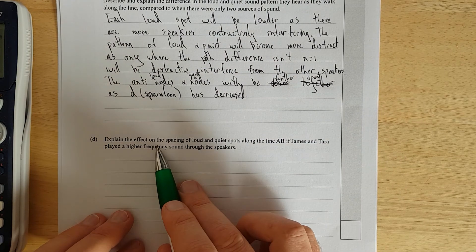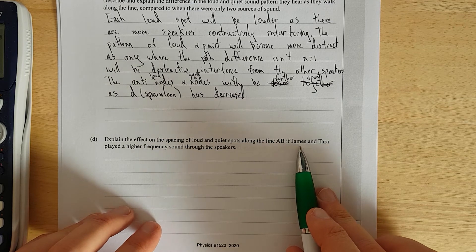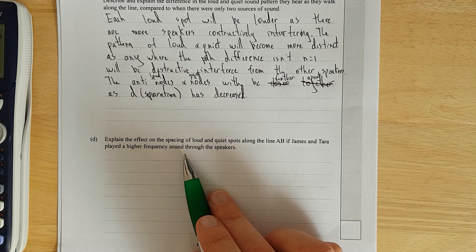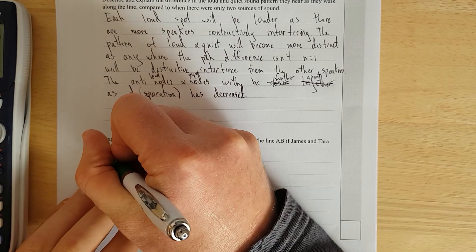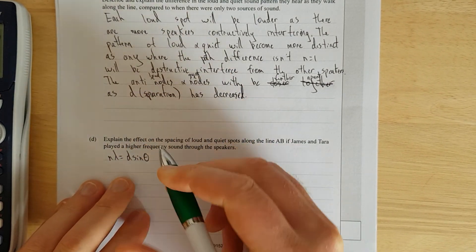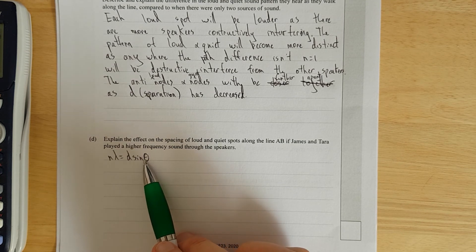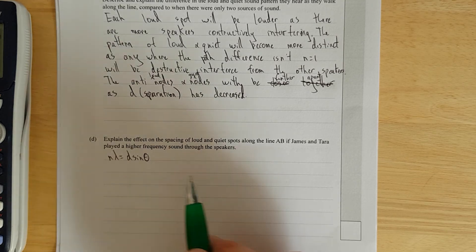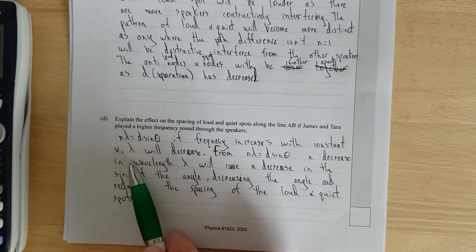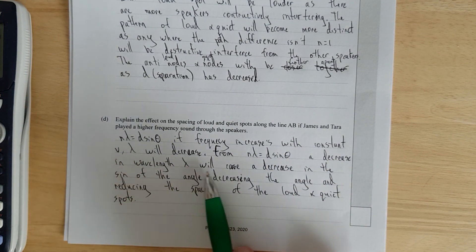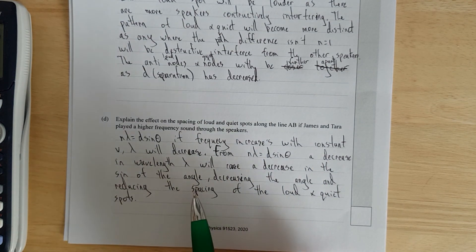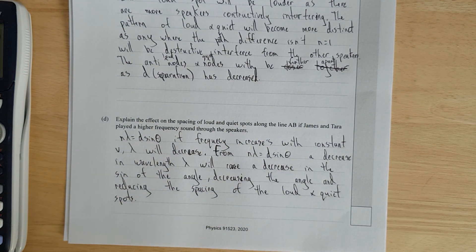Explain the effect on spacing of the loud and quiet spots along the line AB if James and Tara played a higher frequency of sound through the speakers. We've got the formula N lambda equals D sine theta. If frequency increases, wavelength decreases. If wavelength decreases and everything else remains the same, the angle will decrease, but not linearly, it'll decrease with respect to the sine of the angle. I'll pause and write it out. So as I said, if frequency increases with constant velocity, lambda will decrease from the formula N lambda equals D sine theta. Decrease in wavelength will cause a decrease in the sine of the angle, decreasing the angle and reducing the spacing of the loud and quiet spots. I just used sine of the angle because a few years ago kids got pinged for, I mean it's not a linear relationship, it's a sine relationship. So yeah, just be careful with that.